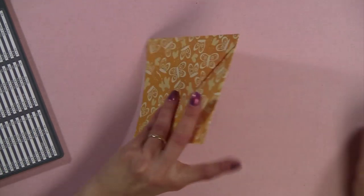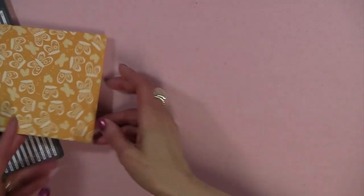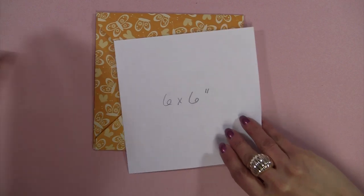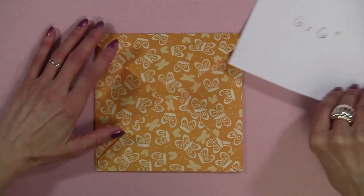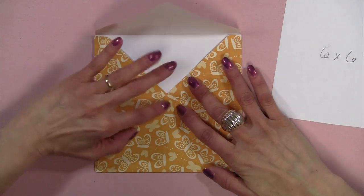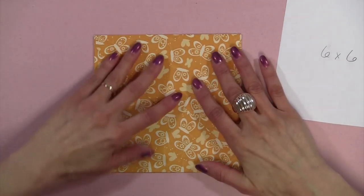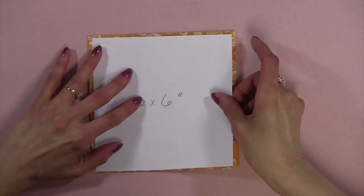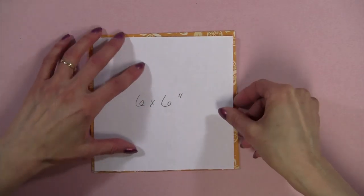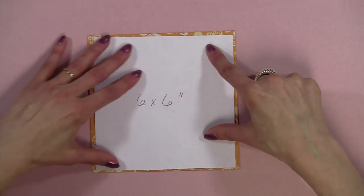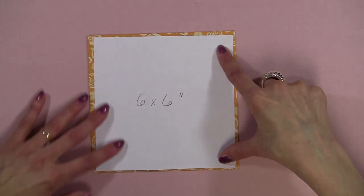And then lastly, I want to show you a six-by-six envelope. I tend to make a lot of six-by-six cards. And when you're doing a six-by-six envelope, you're not going to have that extra piece showing. And I found that the six-by-six envelope is a lot closer to the actual size of the card. It's not perfect, but it's almost perfect around each side.